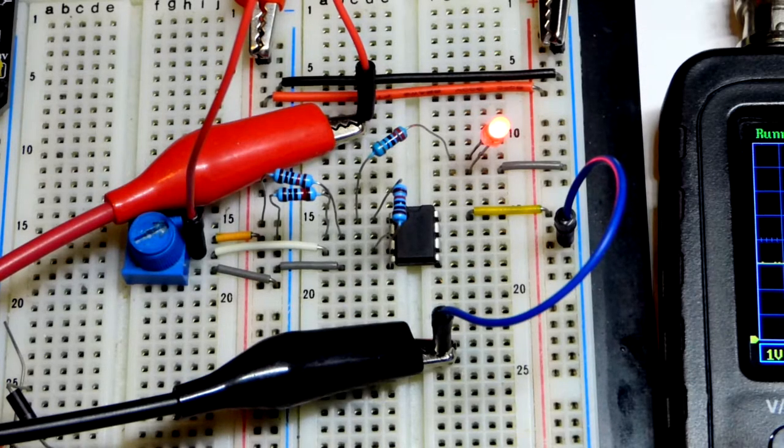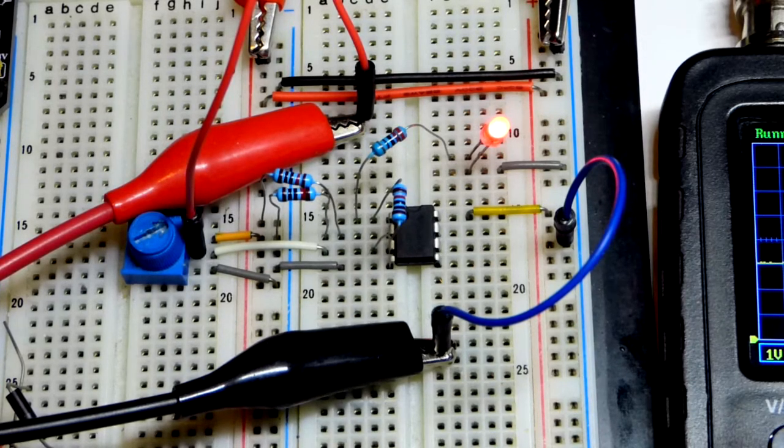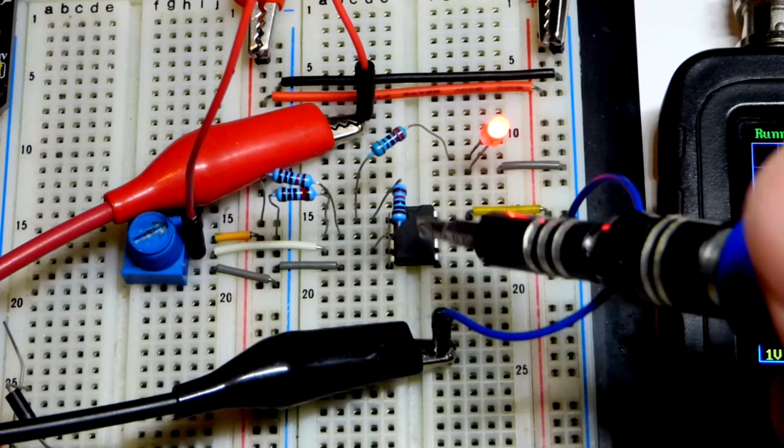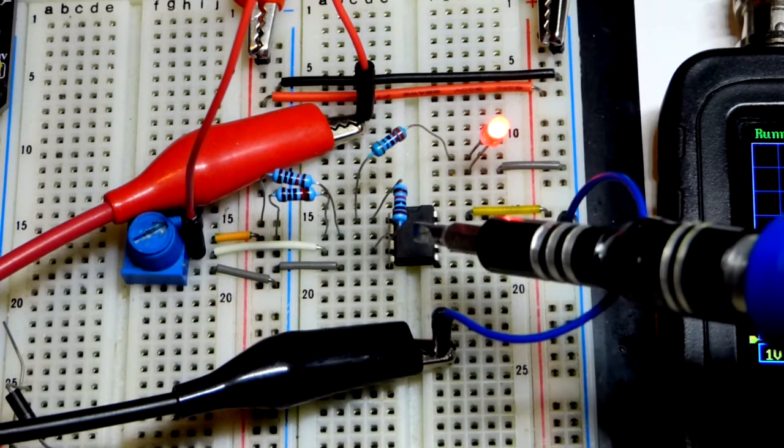So now in the last video, we looked at the Schmitt trigger circuit using NPN bipolar junction transistors. Now we're going to use an op-amp, and there's some different ways you can wire this.